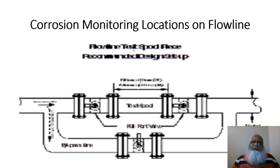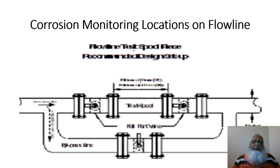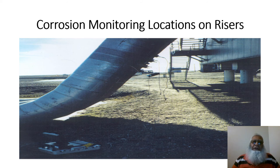This slide shows the corrosion monitoring location on the flow line, illustrating where corrosion monitoring spools are installed. Selecting the right location, the right type of corrosion monitoring spool, and the right material used is essential. The slide also shows that corrosion monitoring spools can be installed on a side stream, as shown in the diagram.